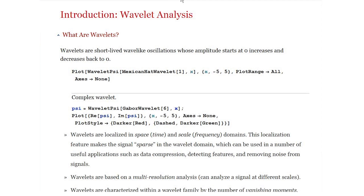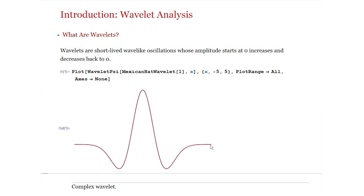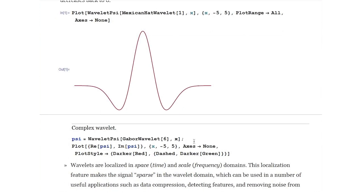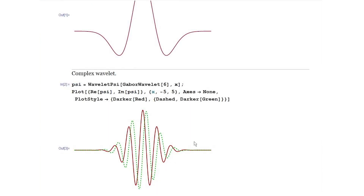The first question we need to ask is: what are wavelets? Wavelets are nothing but short-lived wave-like oscillations — they start from 0, oscillate or wiggle for a certain finite duration, and then go back to 0. In Mathematica, we represent all wavelet functions as WaveletPsi. For example, I'm going to plot a Mexican hat wavelet of order 1 from negative 5 to 5. When evaluated, you can see that it starts from 0, wiggles, and goes back down to 0. Depending upon the application, you could make use of real-valued or complex wavelet functions, the red line being the real part and the dotted line being the imaginary part.